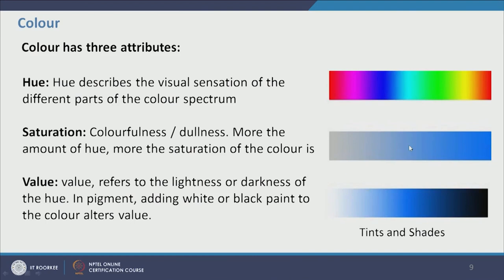Saturation, also called chroma, can be described as the colorfulness or dullness of a particular hue. In this example, blue is taken as the hue and on the left-hand side the saturation is less — at a certain point we cannot recognize it as blue and it appears as gray. On the right-hand side the blue has the highest saturation. Value refers to the lightness or darkness of a particular hue. We can add more black to a hue to get shades, and we can add white to get tints. Adding white increases value; adding black decreases value.